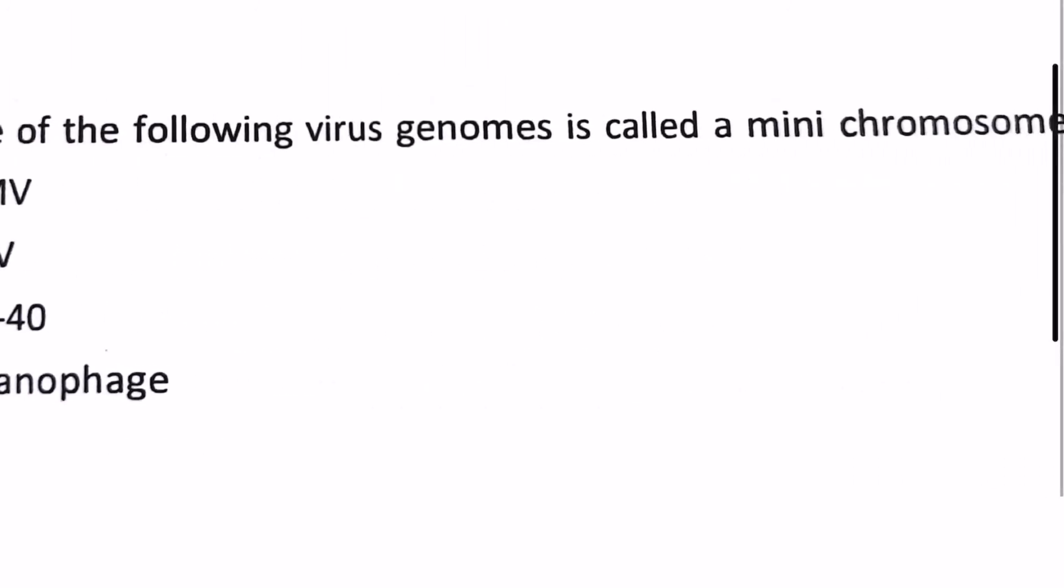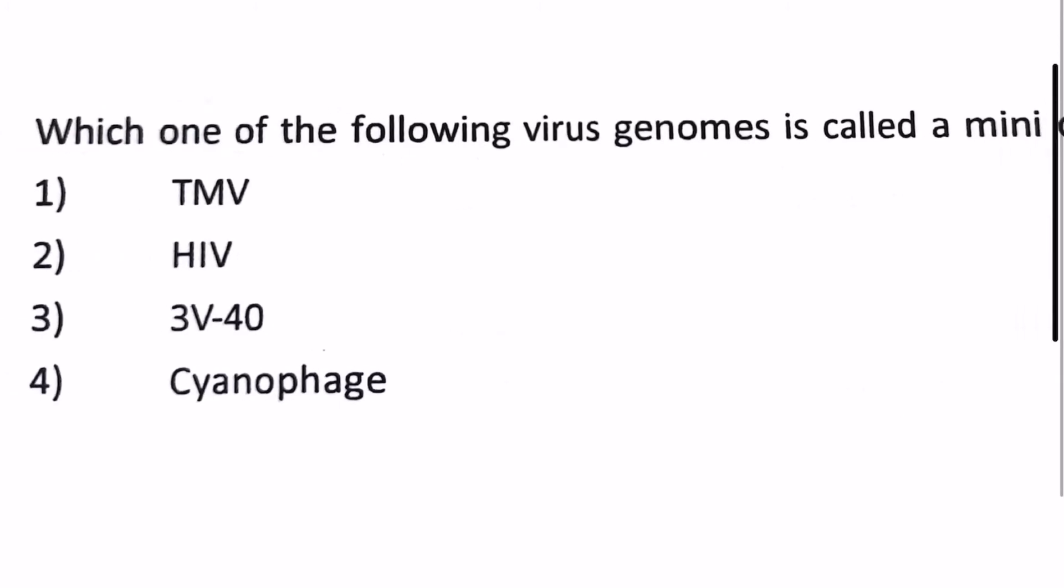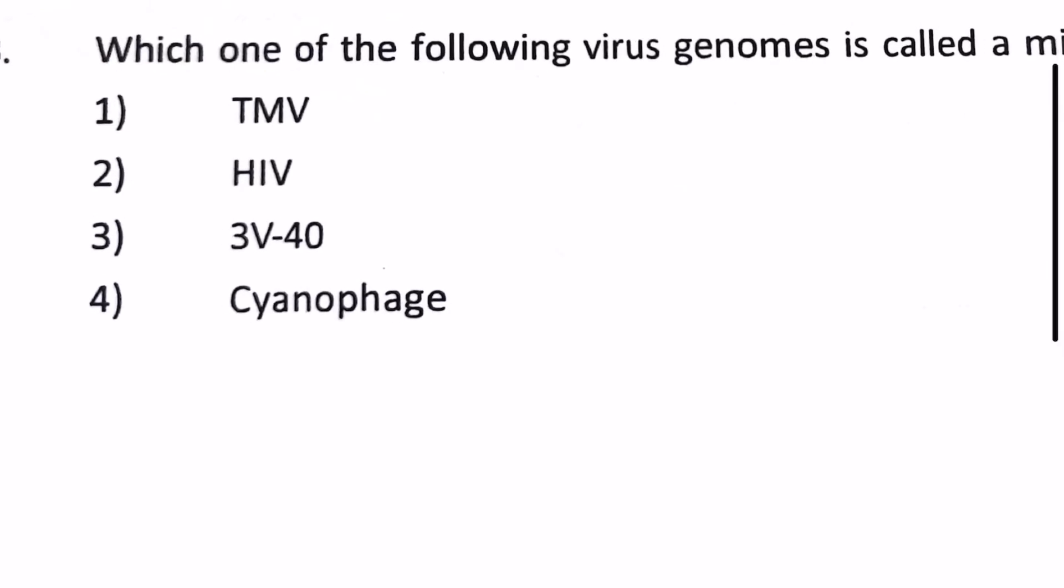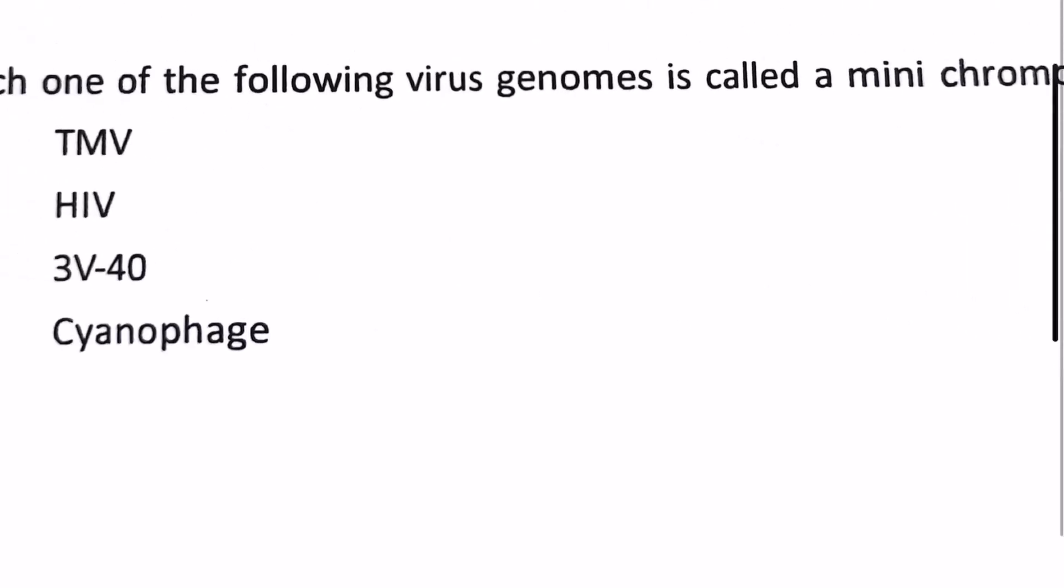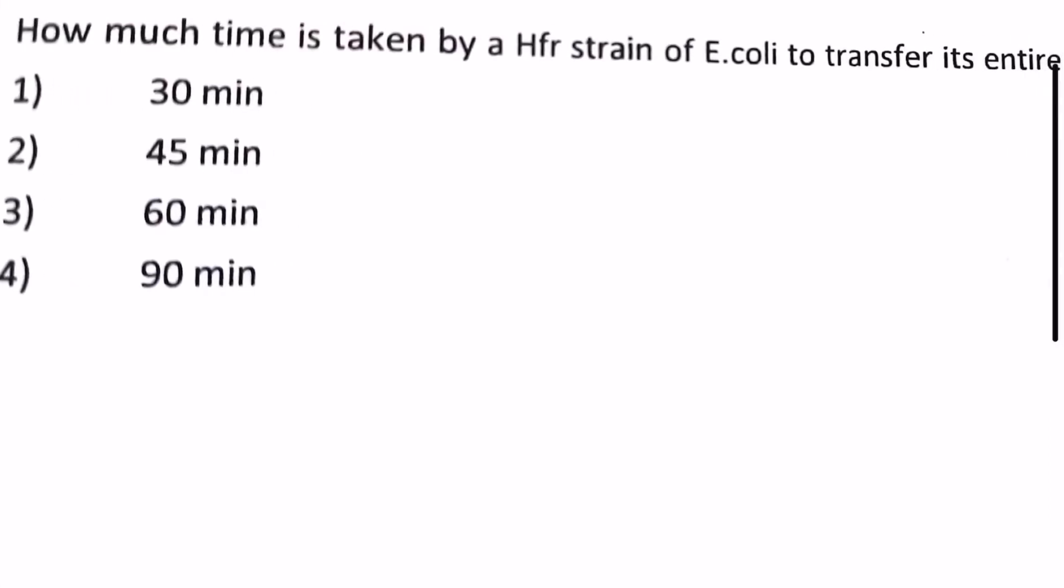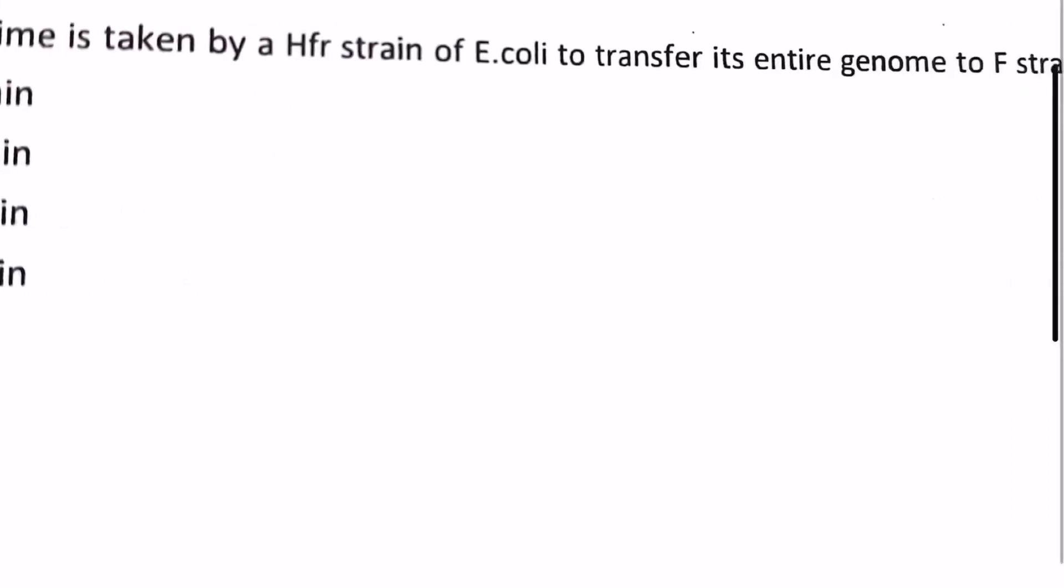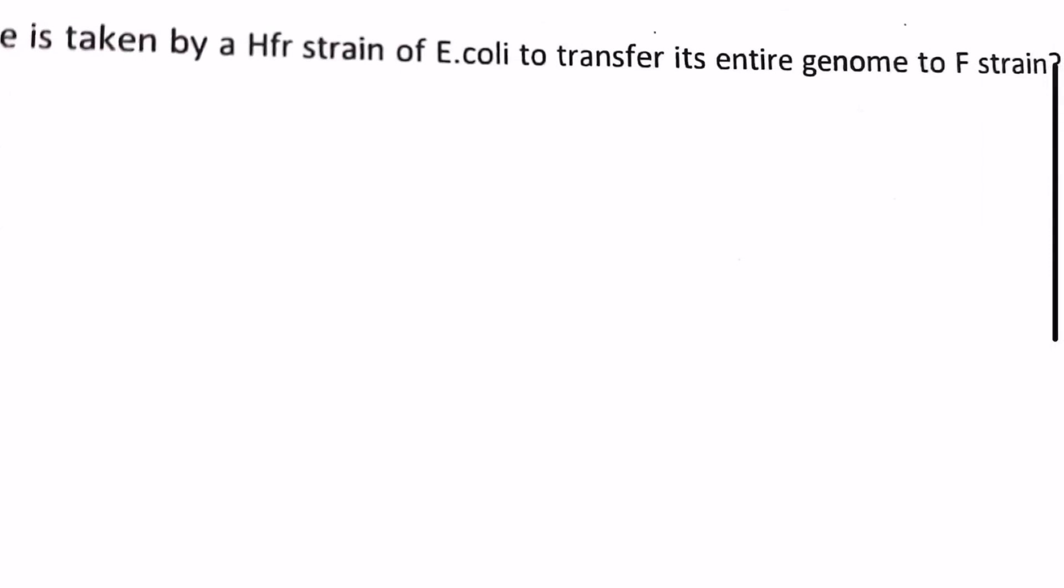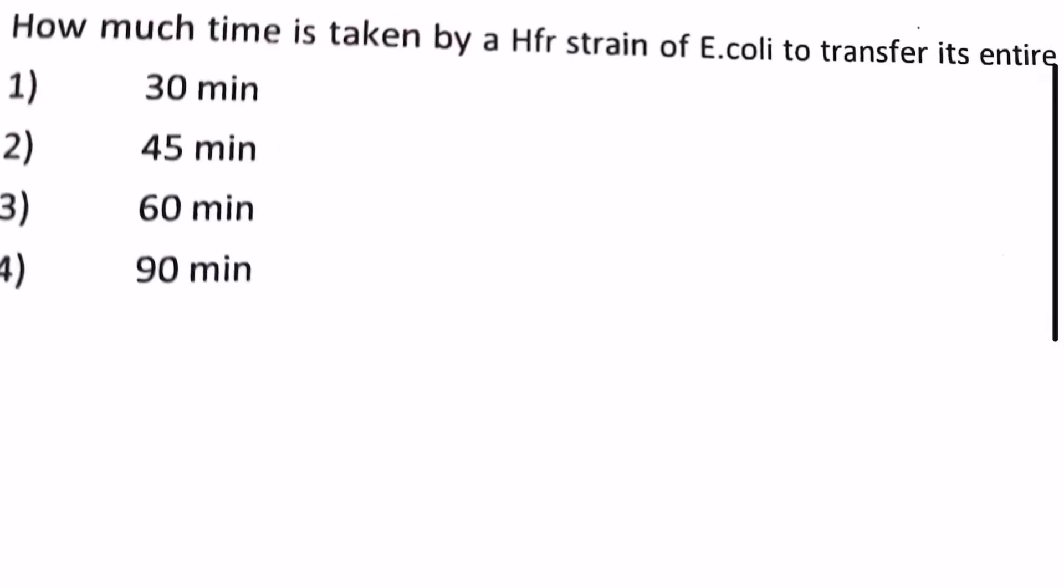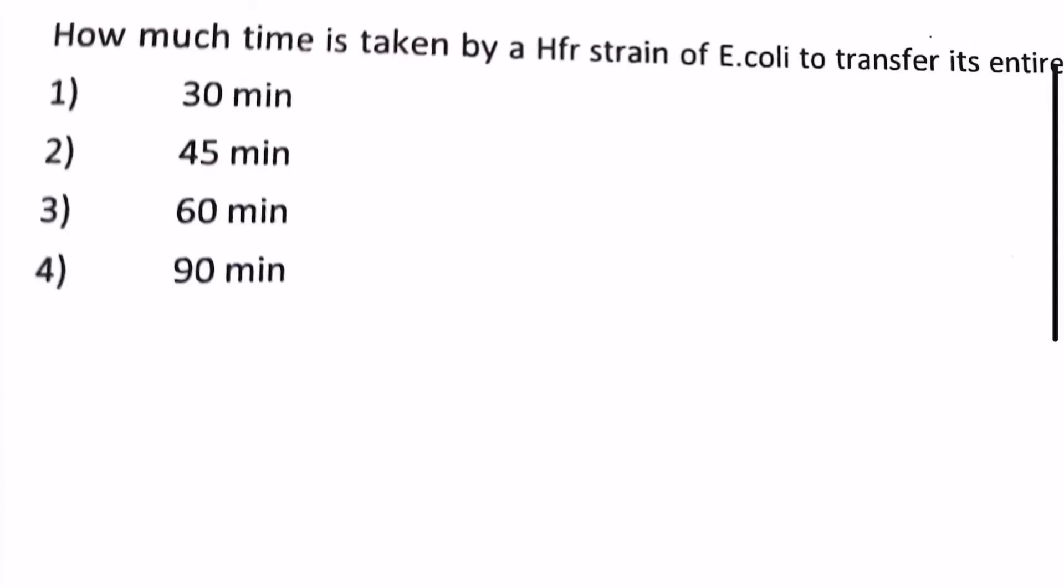Next question: which one of the following virus genomes is called a mini chromosome? 1) TMV, 2) HIV, 3) SV40, 4) cyanophage. Our answer is SV40, which is the mini chromosome virus genome. Next question: how much time is taken by a Hfr strain of E. coli to transfer its entire genome to F strain? 1) 30 minutes, 2) 45 minutes, 3) 60 minutes, 4) 90 minutes. Well with the experiments done it has been observed the time taken is 30 minutes.